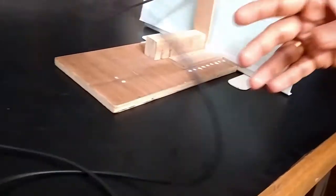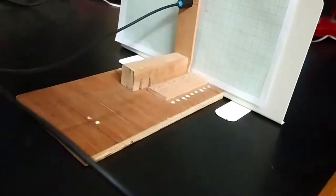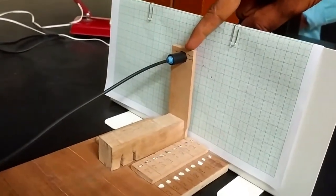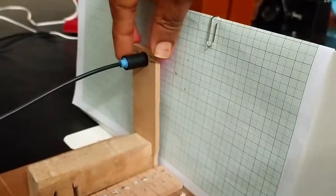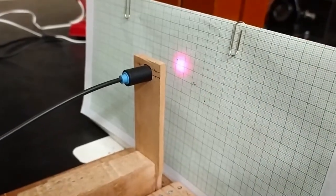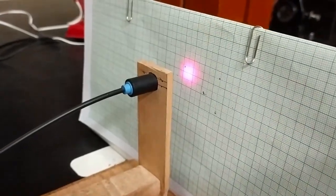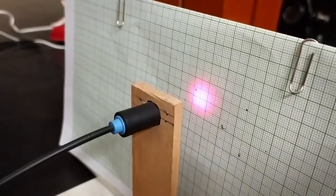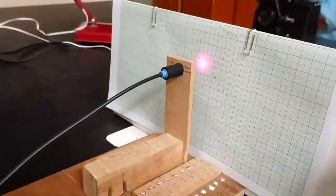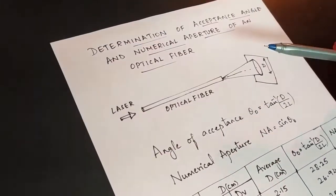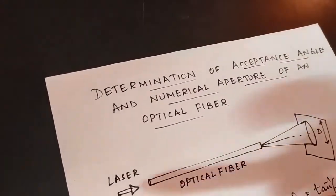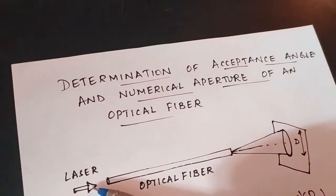This is the optical fiber, and the other end of the optical fiber is mounted on a wooden stand. The light coming out from the optical fiber is marked on the screen. In this experiment, the laser source is used as the source of light.